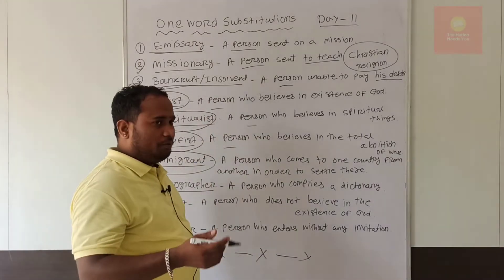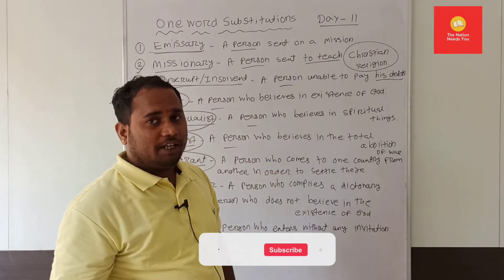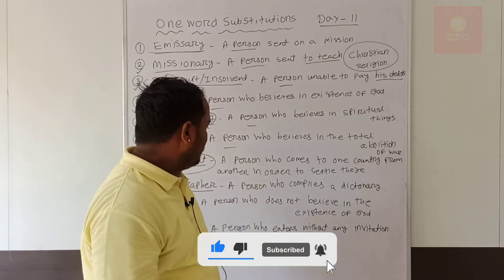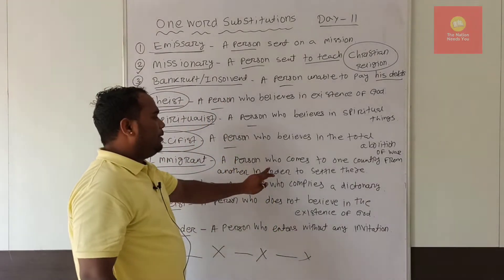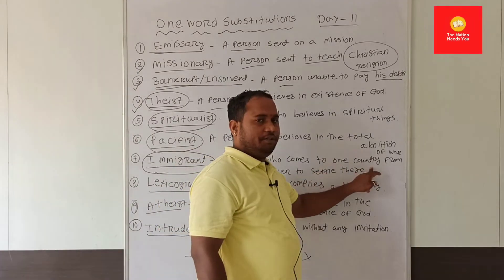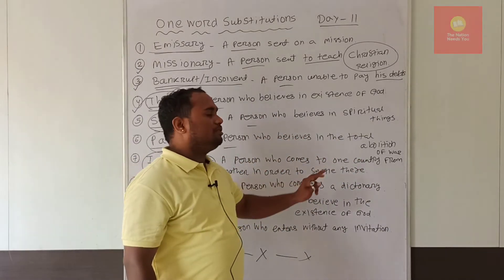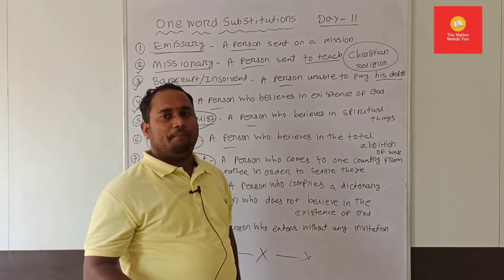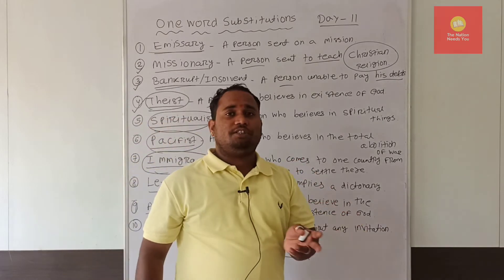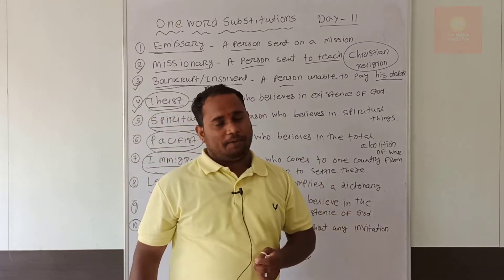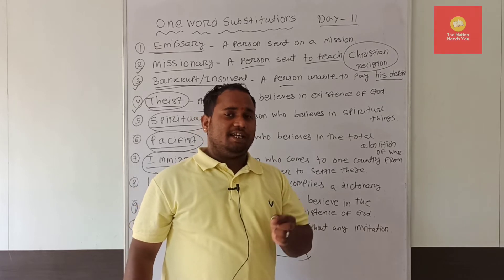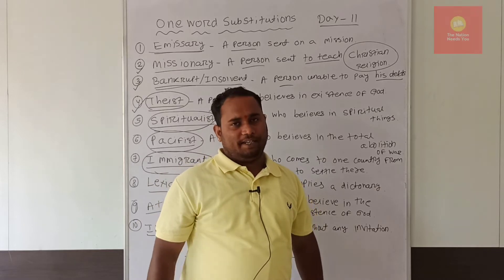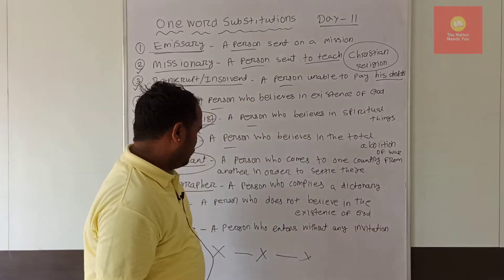Coming to the next word: 'immigrant.' When war broke out in Ukraine and Russia, many people took refuge and moved to other countries to settle there. That is an immigrant — a person who comes from one country to another in order to settle there, to live, work, and raise a family. In India we also have many illegal immigrants, who come without valid or legal authorization.